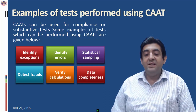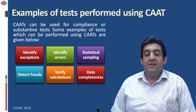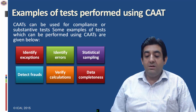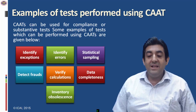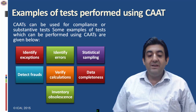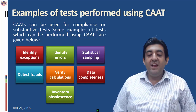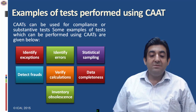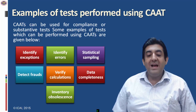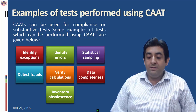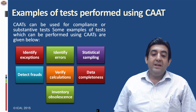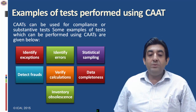Sixth is data completeness, which means all the fields should have valid data. Last is inventory obsoleteness, which means we have to sort the inventory based on some aging criteria to identify the inventory that has become obsolete.